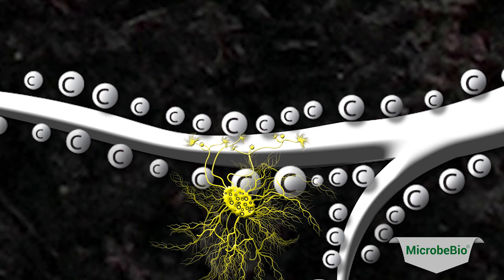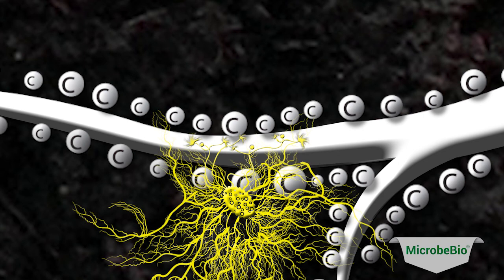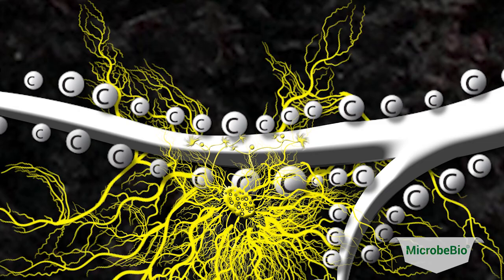The hyphae will continue to develop outside of the root system, forming the extended network of fine filaments which covers up to 700 times more area than the plant roots alone.